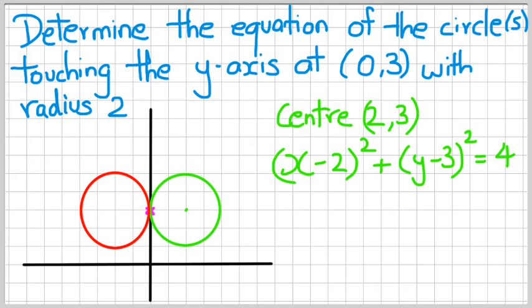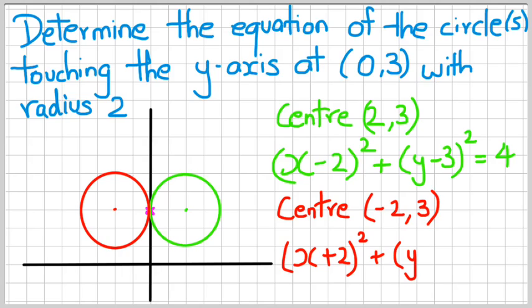Now for the red circle, the center is at (-2,3). Which means the equation would be (x+2)² + (y-3)². And the radius is still 2, so 2² is 4.